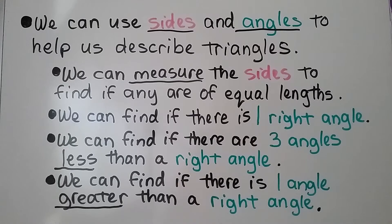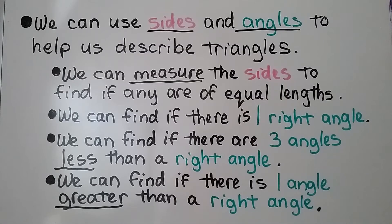We can measure the sides to find if any are of equal lengths. We can find if there is one right angle, if there are three angles less than a right angle, or if there is one angle greater than a right angle.